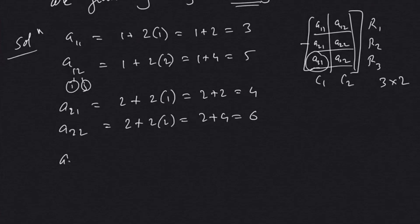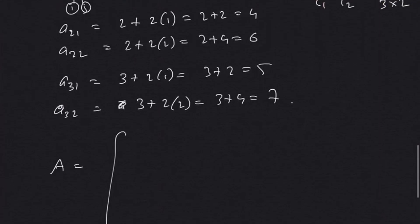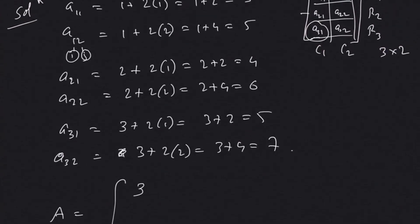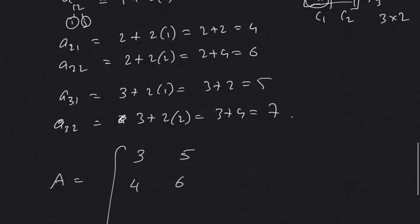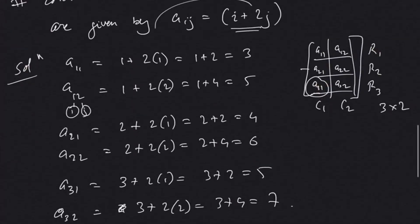a31 = 3 + 2(1) = 3 + 2 = 5. a32 = 3 + 2(2) = 3 + 4 = 7. We can write our required matrix with the respective elements: a11 is 3, a12 is 5, a21 is 4, a22 is 6, a31 is 5, a32 is 7. This is our required matrix of order 3 by 2 whose general element is given by i + 2j.